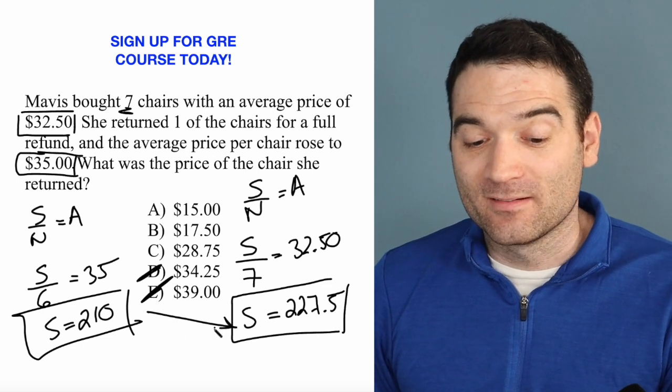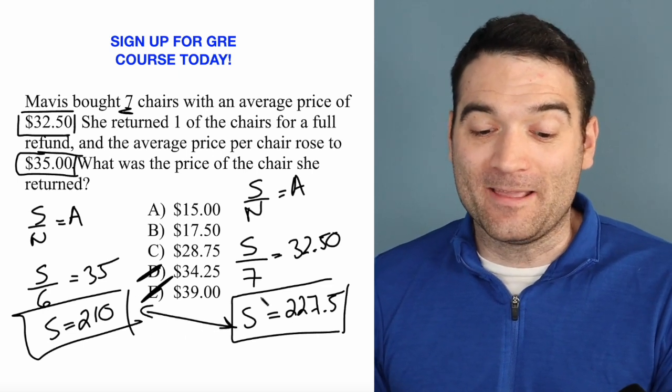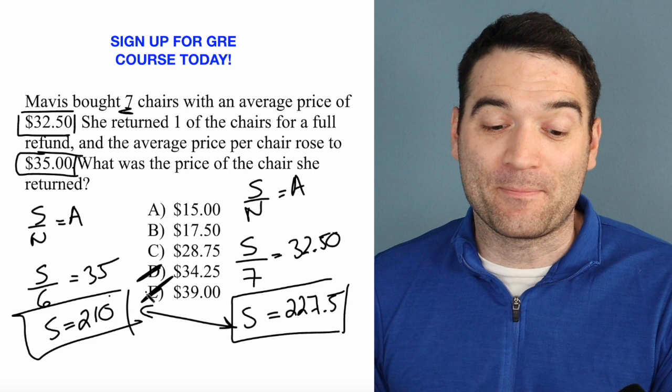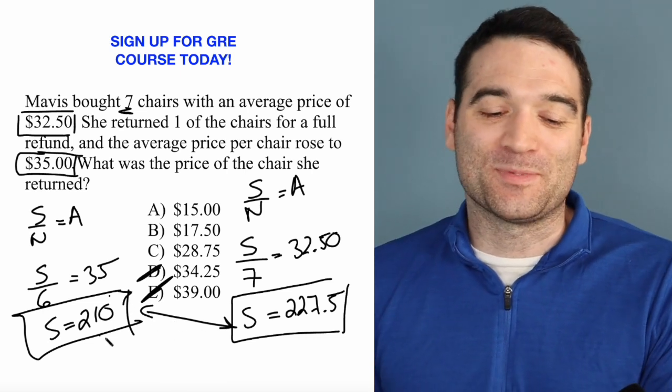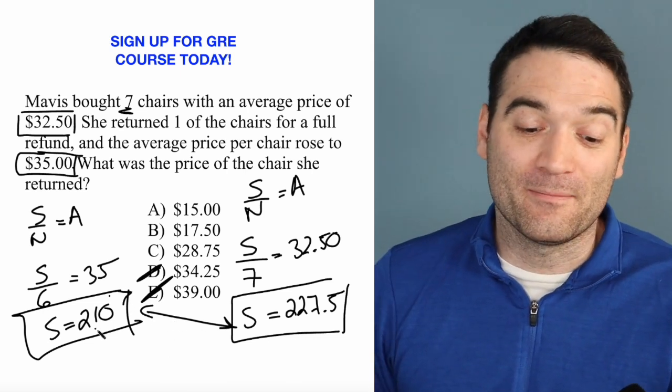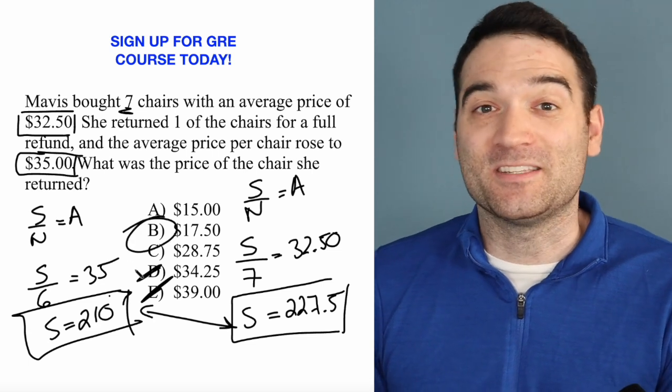Now, this gap here, the gap in what I paid for all the chairs versus what I paid for 6 of the chairs, is the missing chair. How much did I pay for this missing chair? 227.5 minus 210 gives me 17.5.